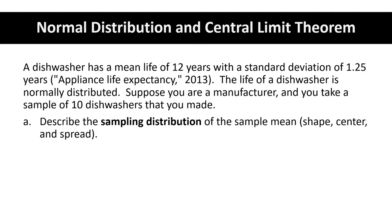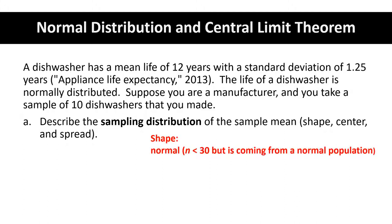Let's start with Part A — the sampling distribution. The sampling distribution of the sample mean has a shape, center, and spread. For shape: if the sample size is 30 or more, no matter the population, the distribution of sample means will be normal. If the original population is already normally distributed, the sample size doesn't matter — so this distribution will be normal even though the sample size is less than 30. The center: this sampling distribution has the same center as the population, which is 12 years.